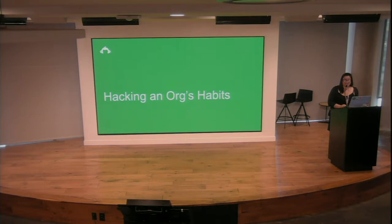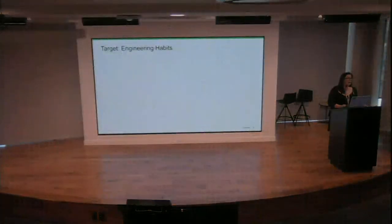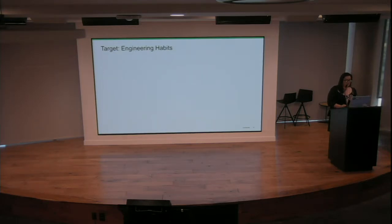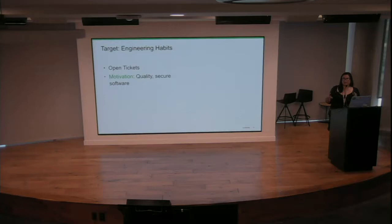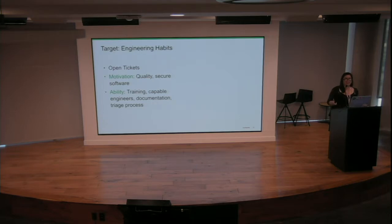So how did I do this at scale across an entire organization? The target was engineering habits. There was a point in time where we had a lot of open tickets, and I wanted to work with the organization to reduce that number. Motivation-wise, talking with all the individuals, we agreed that we wanted to build secure, quality software. The tickets I cut were not superfluous — our engineers are extremely talented and capable. We have a lot of training, documentation, and an insane triage process to make sure we're asking for the right things.